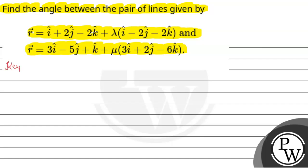Here we have two vectors. Vector r is equal to a1 vector plus lambda b1 vector.